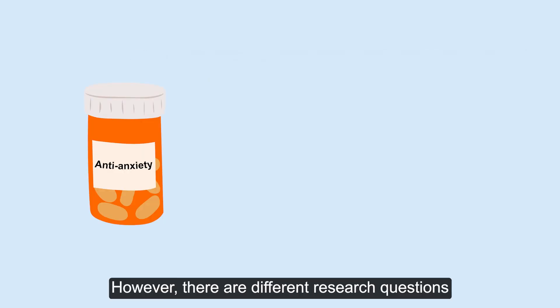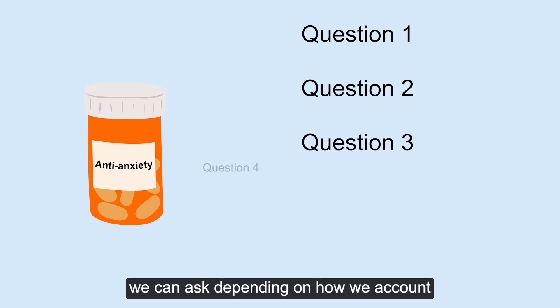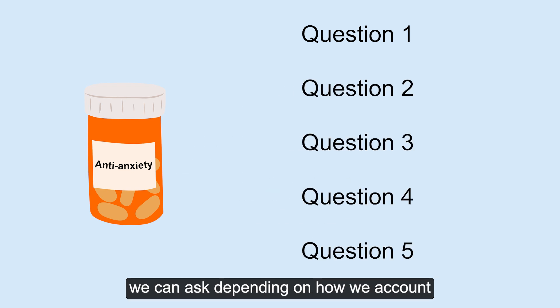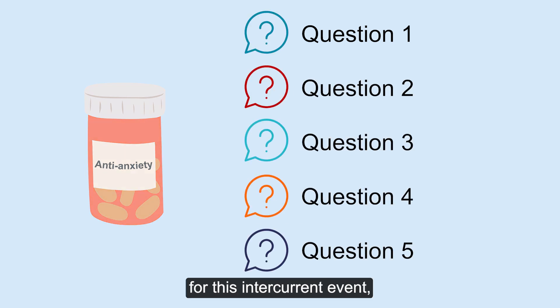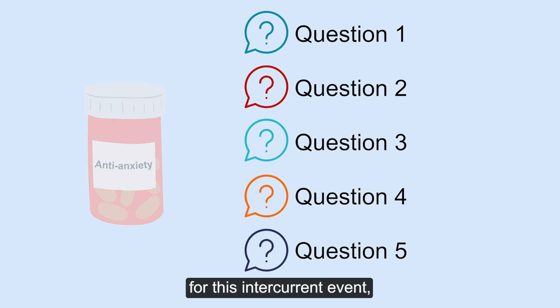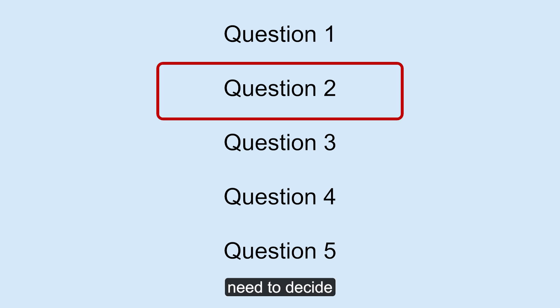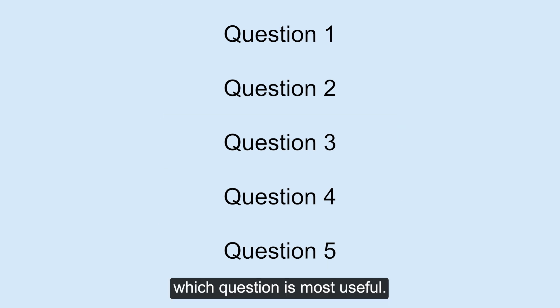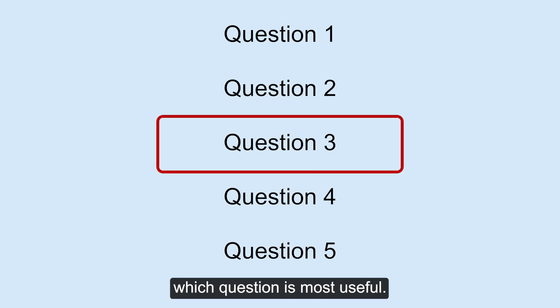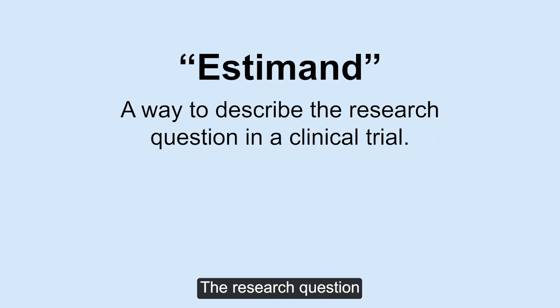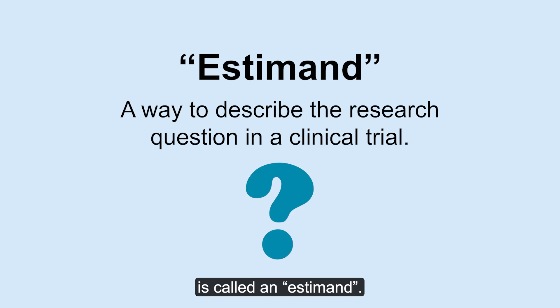Intercurrent events are a normal part of a trial. However, there are different research questions we can ask depending on how we account for this intercurrent event, which means that researchers need to decide which question is most useful. The research question is called an estimand.